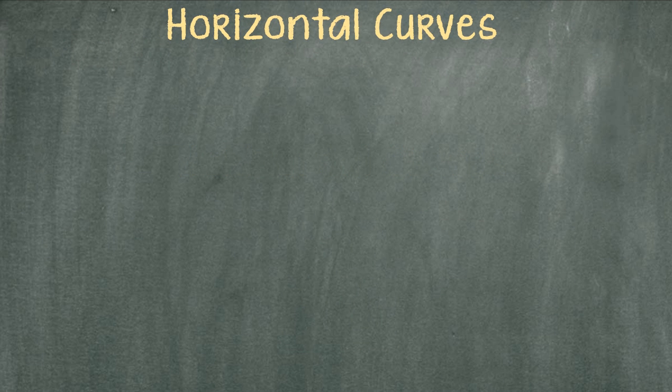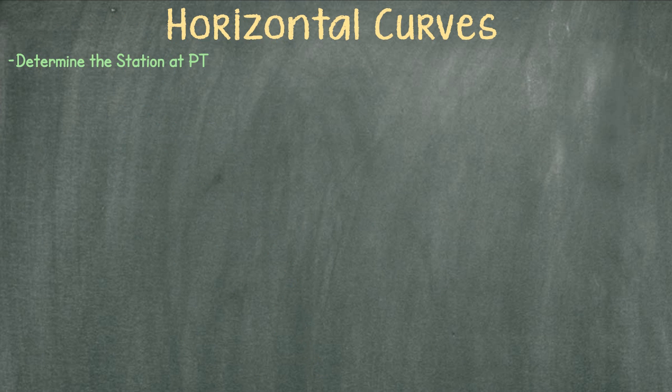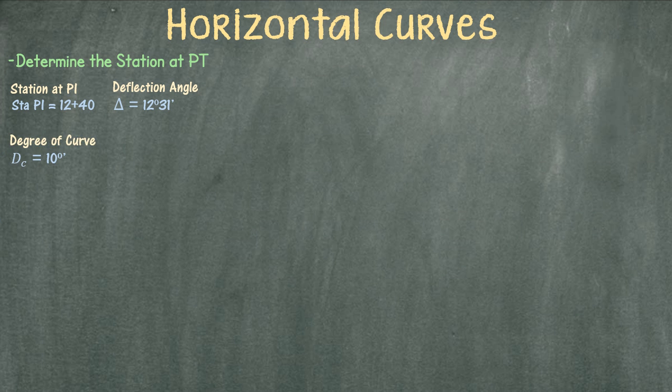We are asked to determine the station at PT using the following information: the station at PI is 12+40, the deflection angle between the tangents is 12 degrees 31 minutes, and the degree of the curve is 10 degrees.